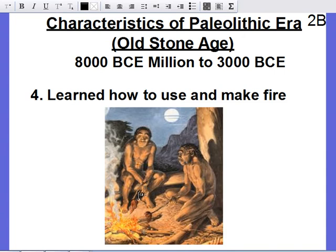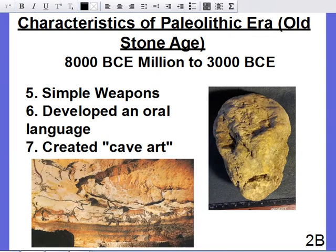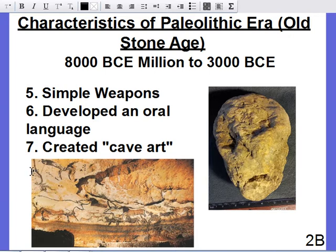One of the most important things about the Paleolithic era is that people learned how to use and make fire. We see a possible Paleolithic camp here — simple tools, sticks used to roast meat. Man figured out that roasting meat makes it good to eat. Everything in this era is simple — weapons are rocks, tools are sharpened sticks, not metal. They did develop an oral language to communicate, and they created cave art, expressing themselves through artwork despite their simplicity.